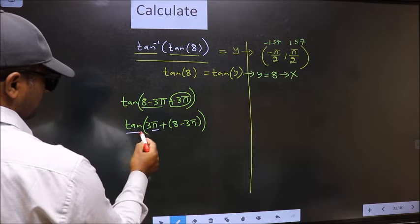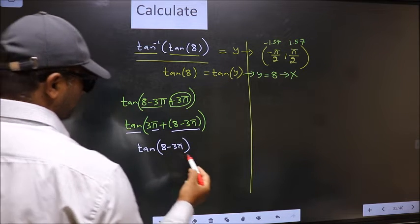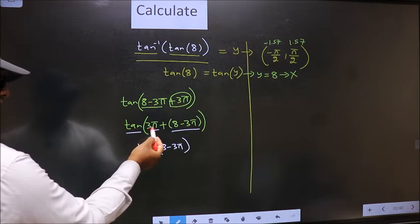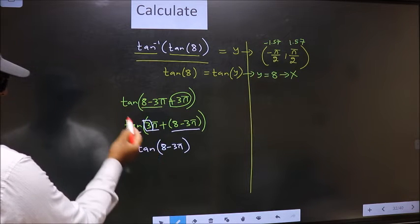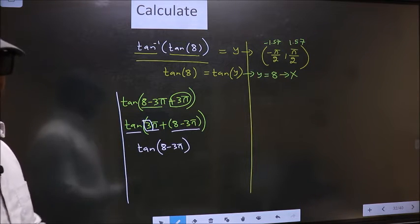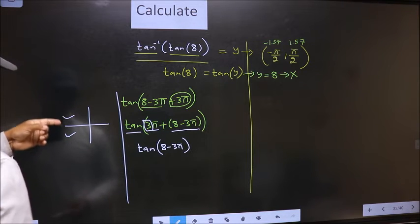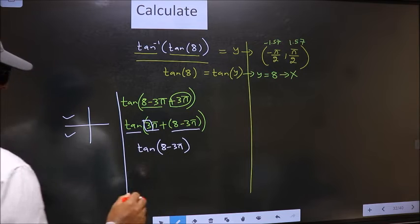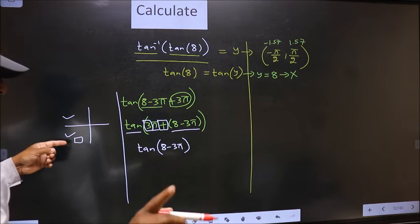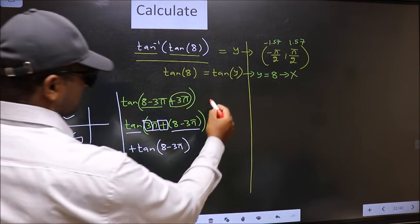Here we have pi, so tan is not going to change — it will remain tan — and inside we get the angle 8 minus 3 pi. Now the question is will we get plus or minus. To answer that, we look at the number before pi, which is 3. And 3 is odd. All the odd multiples of pi lie in either the second or the third quadrant. To select the quadrant, we look at this symbol — here we have plus — that means the angle lies in the third quadrant. And in the third quadrant, tan is positive, so put plus.